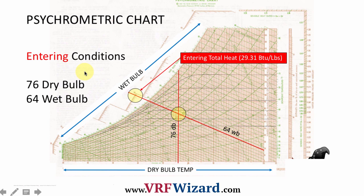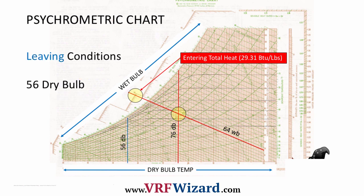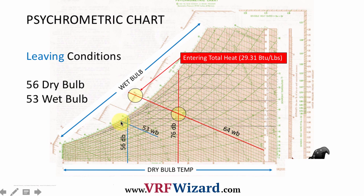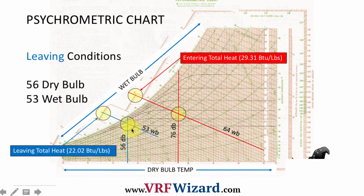Now we plot the leaving conditions. We had 56 dry bulb — here's 50, here's 60, here's 56. Now we plot the wet bulb of the leaving air, which is 53 wet bulb — here's 55, here's 50, then 51, 52, 53. We find that intersection and extend the line onto the enthalpy chart, which shows us 22.02 BTUs per pound of dry air.